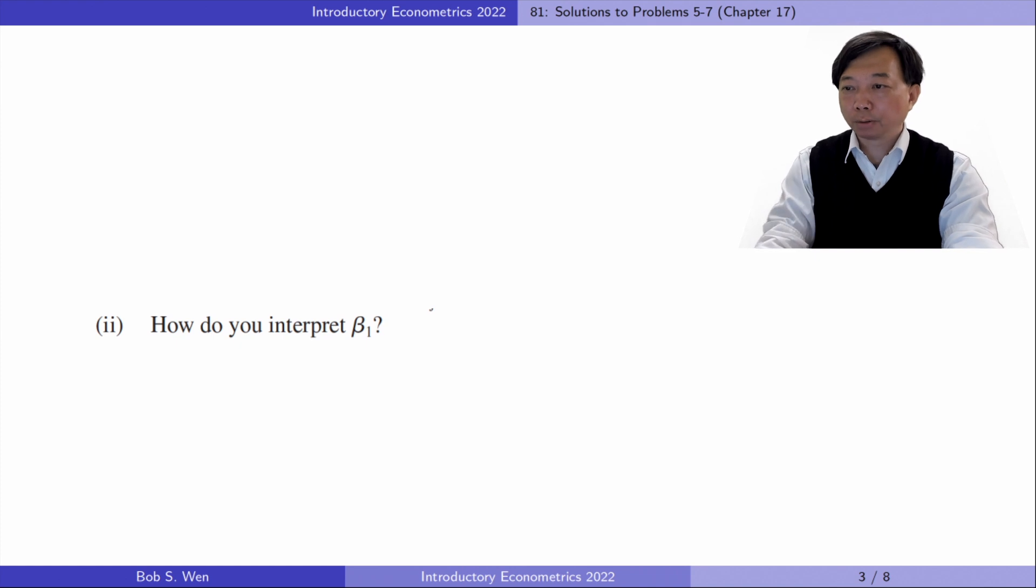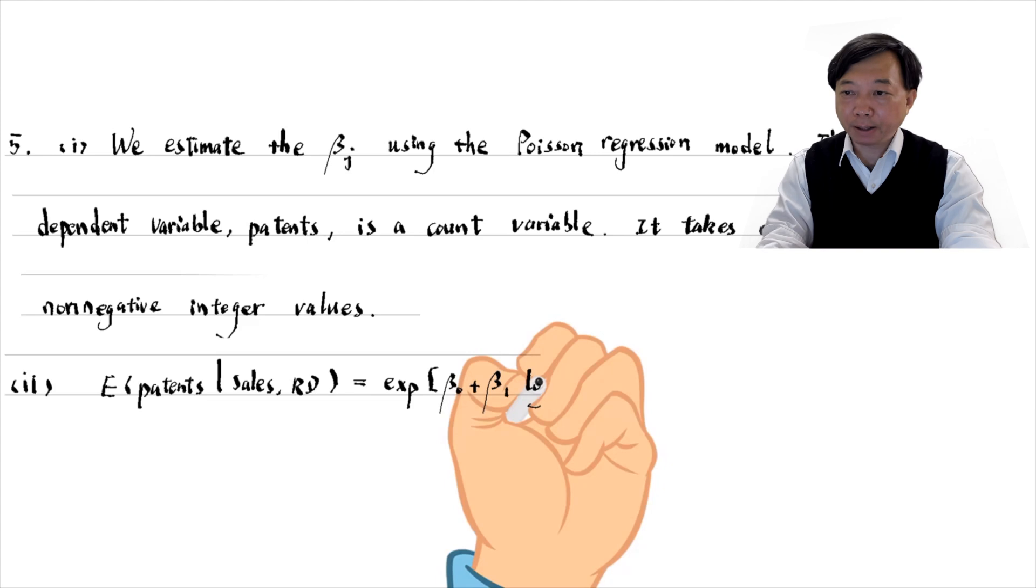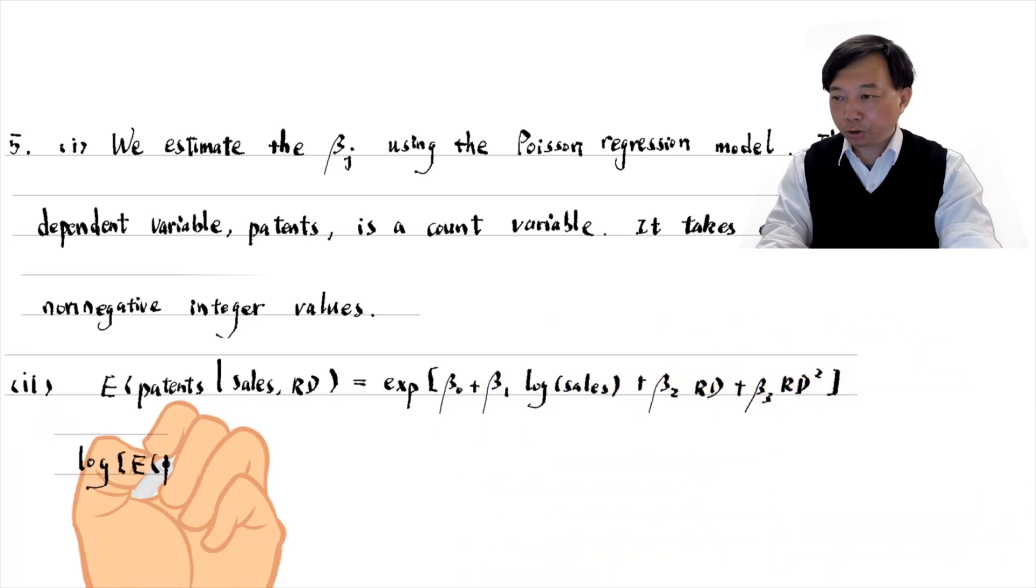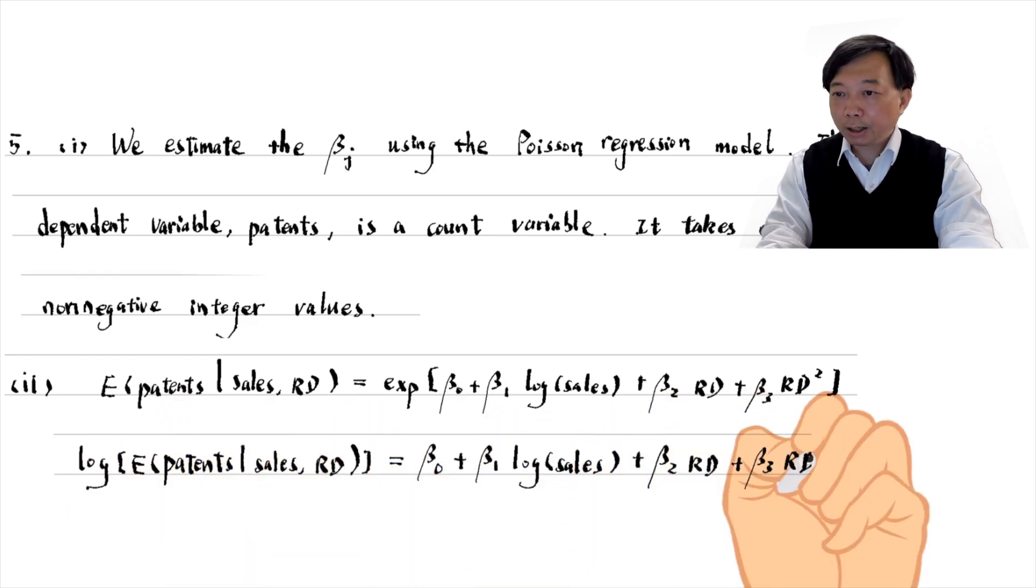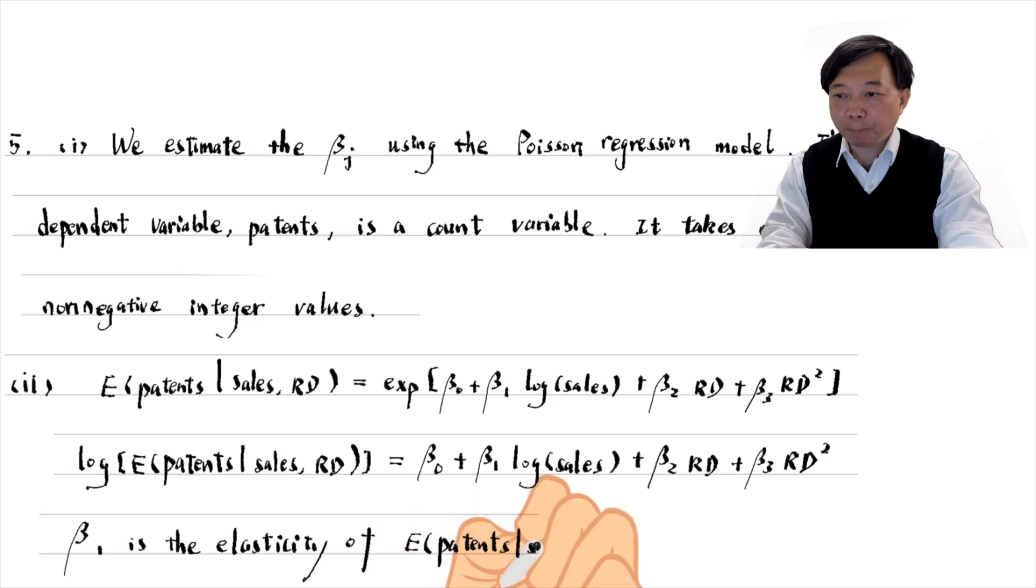In part 2, how do you interpret beta 1? The expected value of patents is an exponential function of the explanatory variables. If we take the log of the equation, we can see that beta 1 is the percentage change in the expected value of patents given a 1 percentage change in sales. In other words, beta 1 is the elasticity of the expected patents with respect to sales.